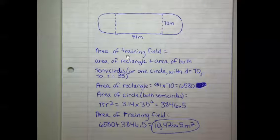Here are my notes with my attempt to redraw the training field. The area of the training field is the area of the rectangle plus the area of both semicircles. Two halves of a circle gives us one whole circle. This circle has a diameter of 70 meters, so 70 divided by 2 is 35 for the radius.